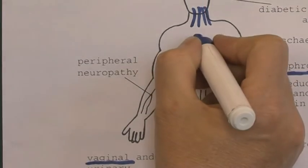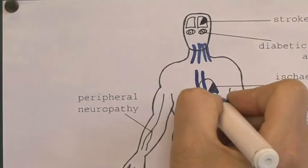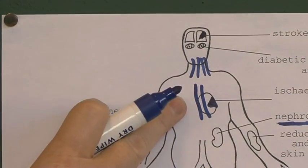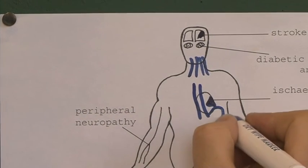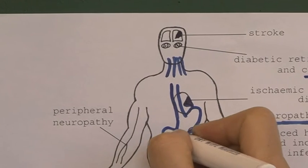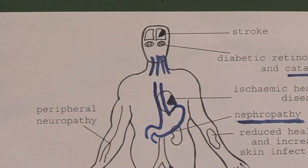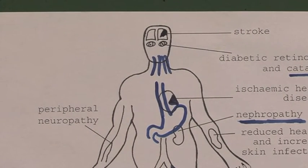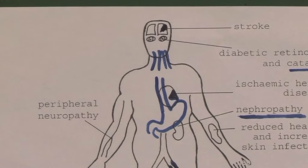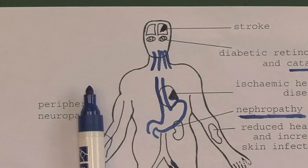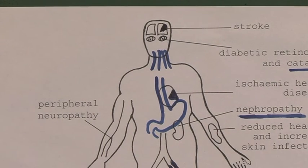The autonomic effects include dysphagia due to the autonomic effect on the esophagus, and gastroparesis due to the autonomic effect on the stomach. The autonomic effects can also affect the heart and all of the blood vessels globally, leading to the postural hypotension which we also noted.